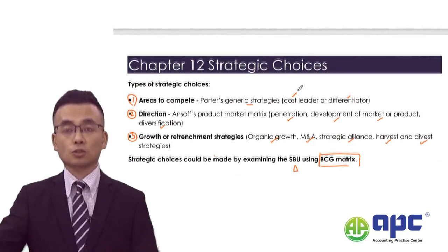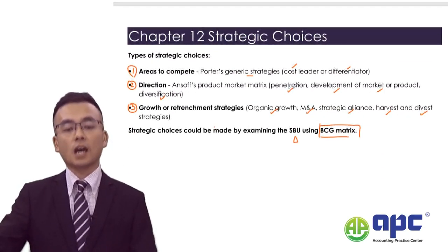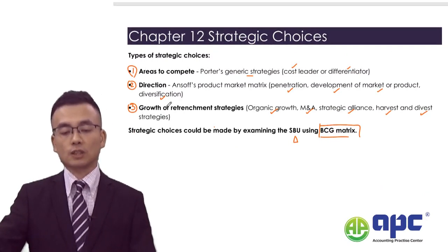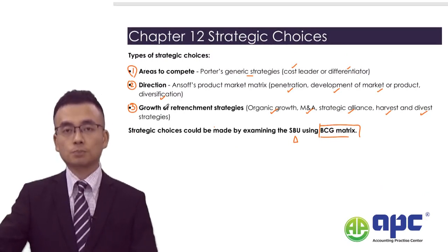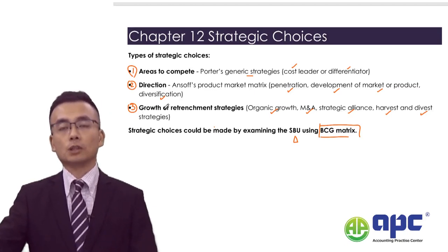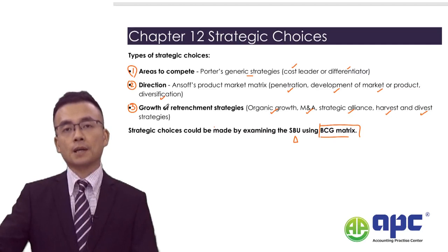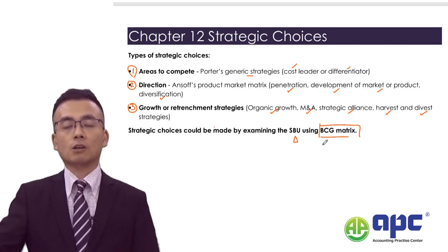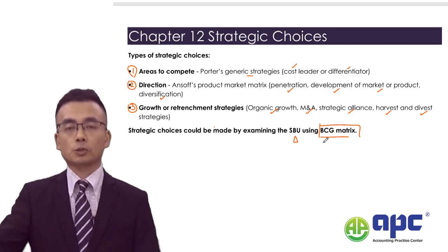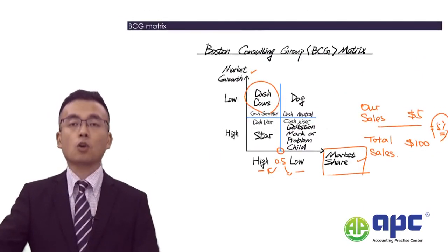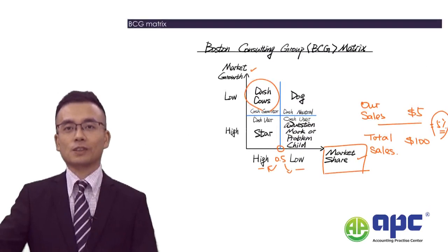Strategic choices are very important. Bear in mind: areas to compete, direction, and growth or retrenchment strategy for each product line, geographical area, or industry you're operating in. For each of these, you can examine them using the Boston Consulting Group matrix by categorizing into four different boxes: Problem Child, Thin Dog, Star, or Cash Cow. A very important concept.